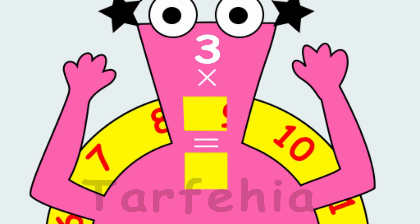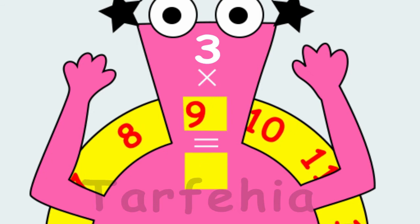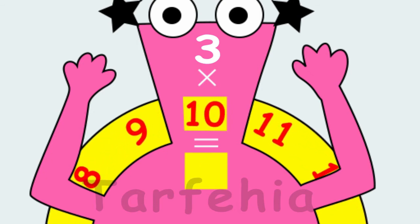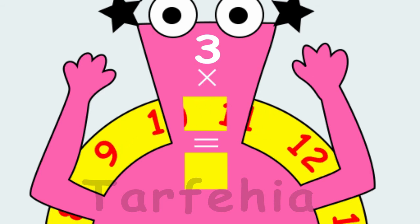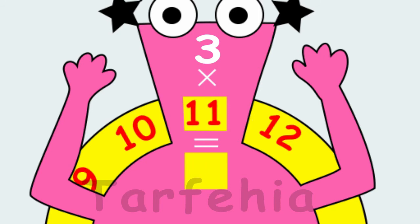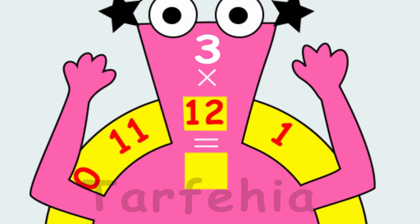Three times nine equals twenty-seven. Three times ten equals thirty. Three times eleven equals thirty-three. Three times twelve equals thirty-six.